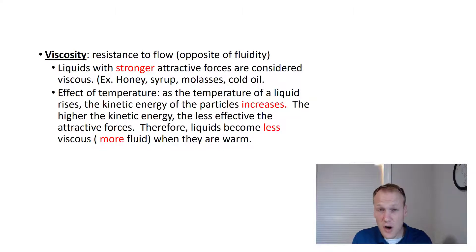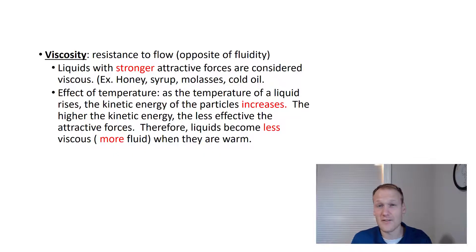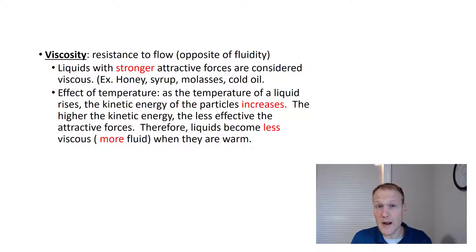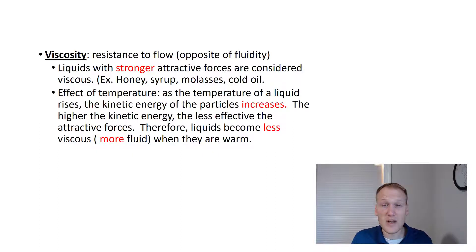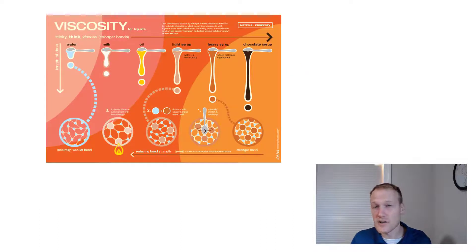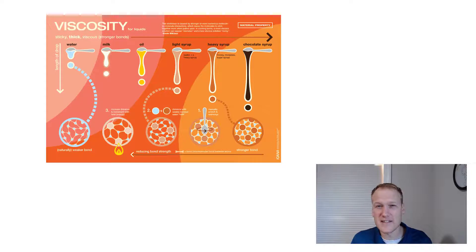Viscosity is typically caused by stronger intermolecular forces, making the liquid resistant to flow. Viscosity can be manipulated — if we heat up the molecules within a viscous liquid, that will make them move around more and disrupt the intermolecular forces holding them together, allowing it to flow. This is why you would microwave honey so that it pours easier. A chart shows that water is not viscous at all, while chocolate syrup and heavy syrup are very viscous and resist flow.